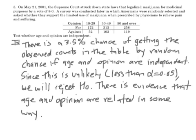The conclusion paragraph: there is a 3.5% chance of getting the observed counts in the table by random chance if your null hypothesis is true, which is that age and opinion are independent. Since this is unlikely — less than alpha equals 0.05 — we reject the null hypothesis. There is evidence that age and opinion are related in some way.